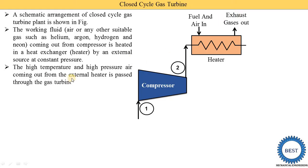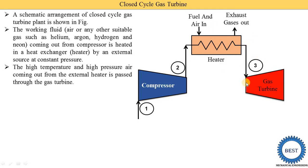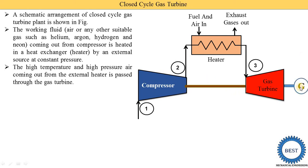The high temperature and high pressure air coming out from the external heater is passed through the gas turbine. High temperature and high pressure gas from the heater is supplied to the gas turbine, where the gas expands and the rotor starts to rotate, producing mechanical energy. Some quantity of mechanical energy produced by the gas turbine is supplied to the compressor, and some is supplied to the generator, where it is converted into electrical energy.